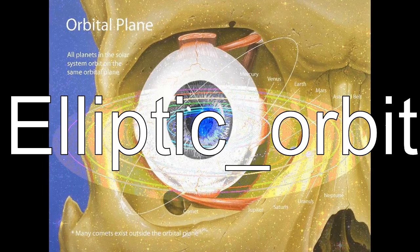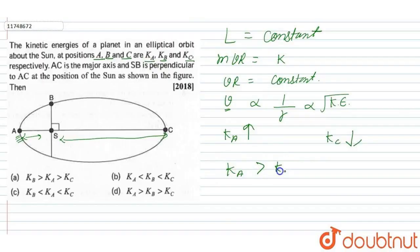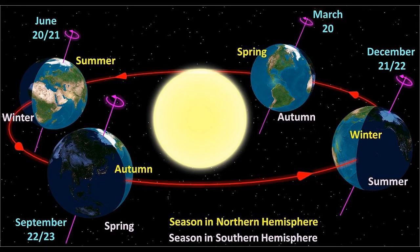Elliptic orbit in a gravitational two-body problem with negative energy. Both bodies follow similar elliptic orbits with the same orbital period around their common barycenter.